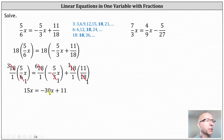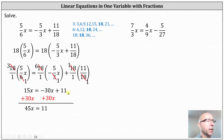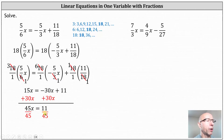For the next step, let's get the x terms on the same side of the equation. Let's add 30x to both sides of the equation. Simplifying, we have 45x equals 11. And since 45x means 45 times x, for the last step we divide both sides by 45, giving us x equals 11 forty-fifths. The only common factor between 11 and 45 is 1, and therefore the simplified solution is x equals 11 forty-fifths.